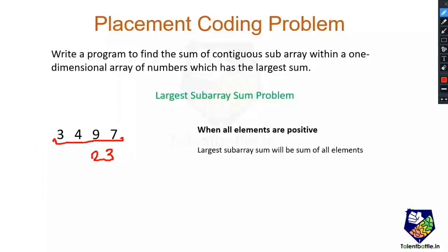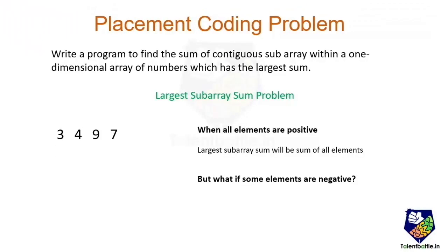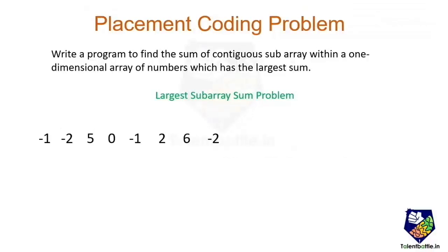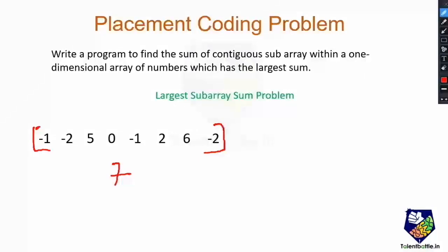But the tricky part is when one or more elements of the array are negative. We have to come up with a different approach. Consider the array [-1, -2, 5, 0, -1, 2, 6, -2]. If we apply our previous approach, the sum of all elements is 7. But just by looking at this array, we can see the subarray [2, 6] has a subarray sum of 8. We know 8 is greater than 7, so we cannot apply the previous strategy. We have to come up with a different solution.